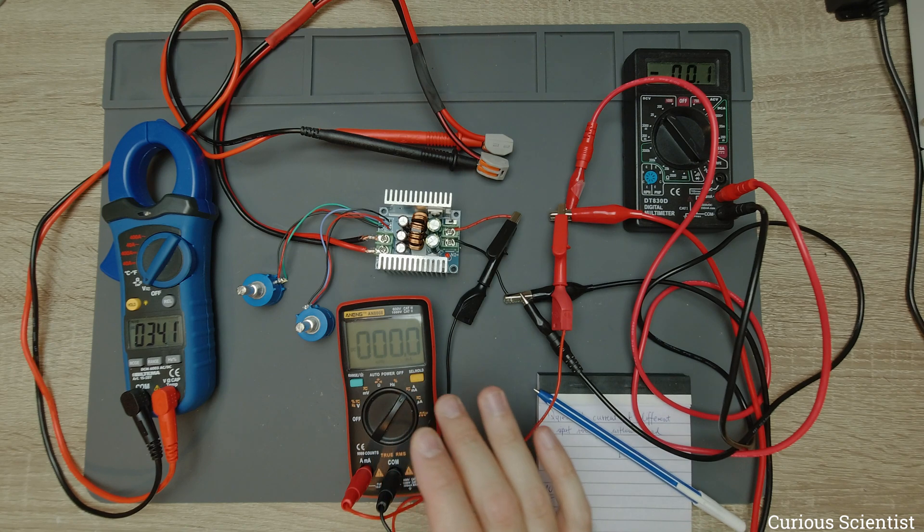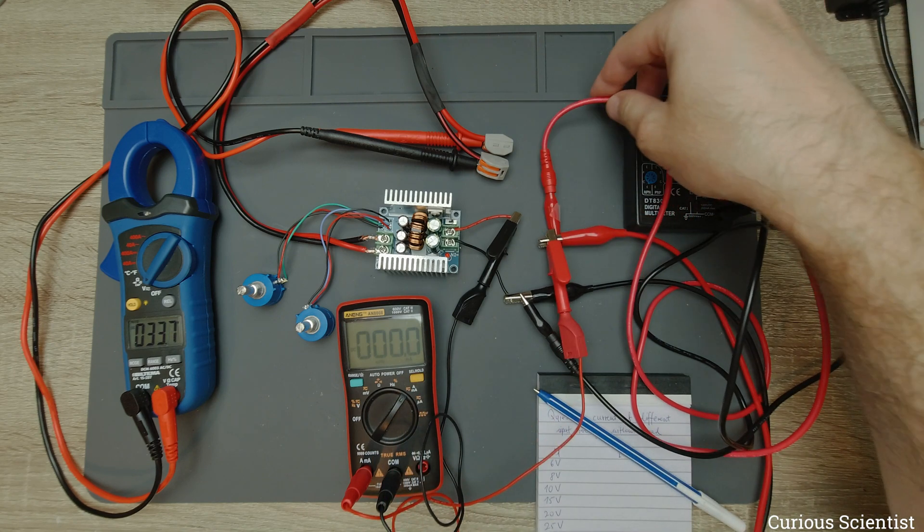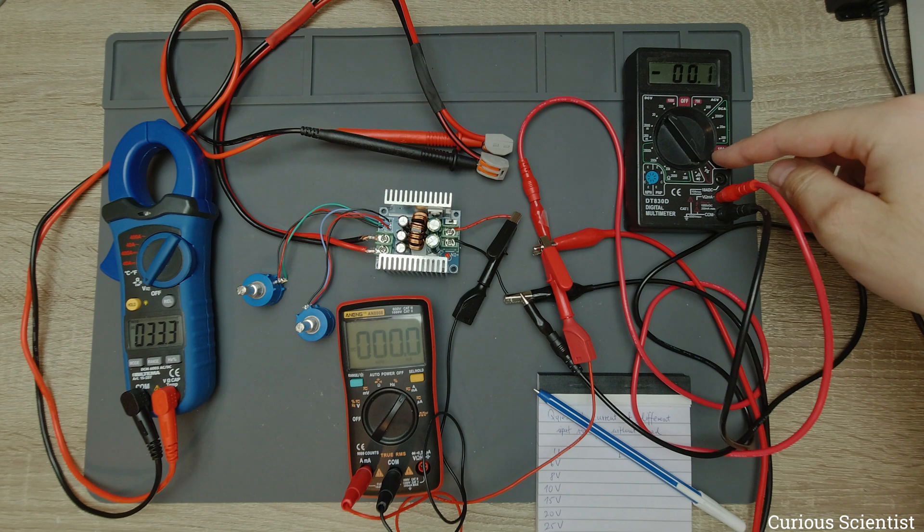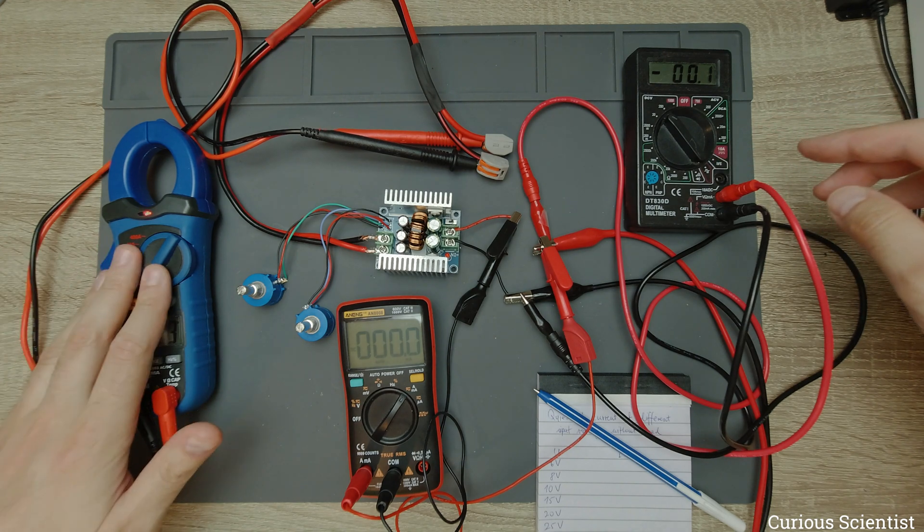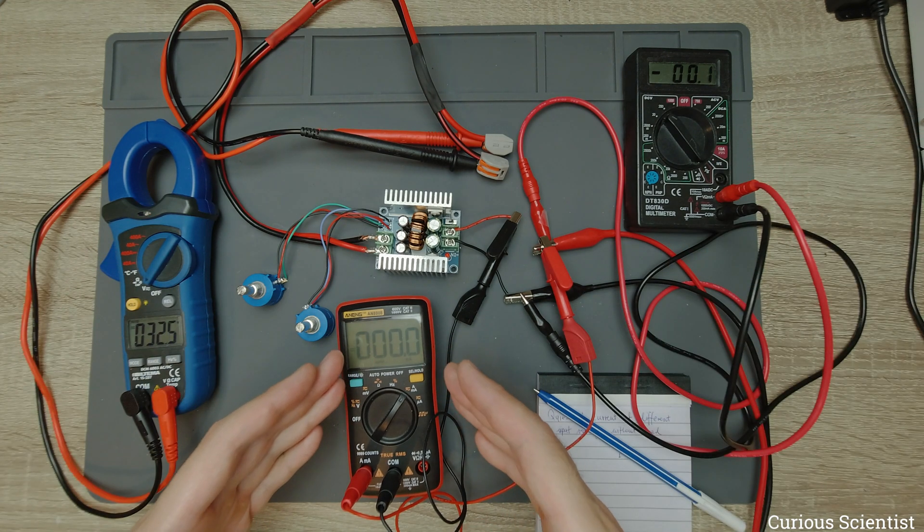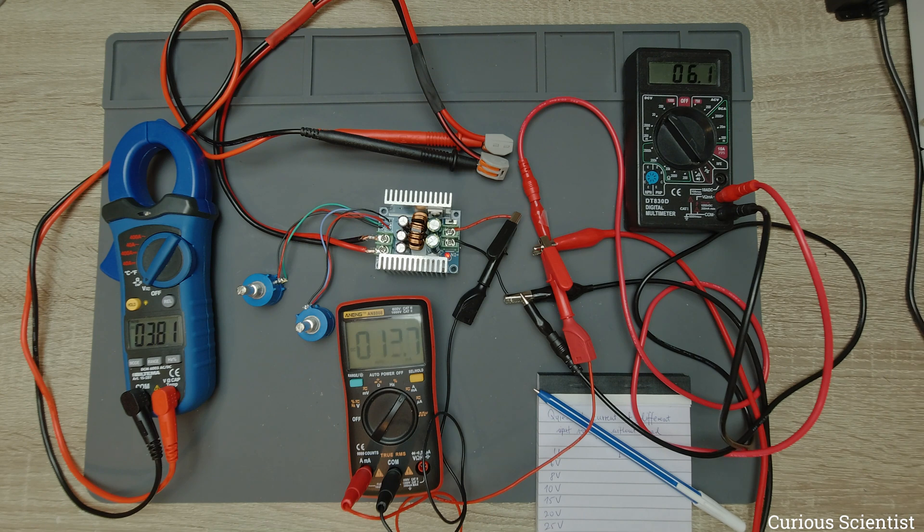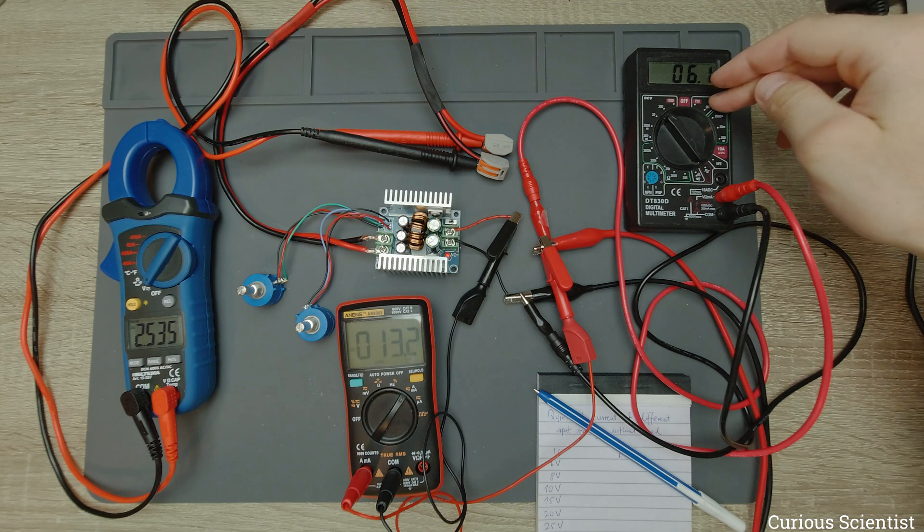First of all, we will start at 6 volts. You should see 6 volts here when I press the button, and then we will see the output voltage here, and then this will be the input current. So I turn on the power supply and as you can hopefully see it, that is 6 volts here.